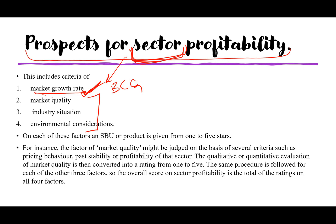The matrix is plotted using two variables: companies' competitive capabilities — how good the company is compared to its competitors — and prospects for sector profitability — how profitable the sector is in which the organization functions. Each SBU or product line is given one to five marks across all these factors, and it is then plotted in the Directional Policy Matrix accordingly.